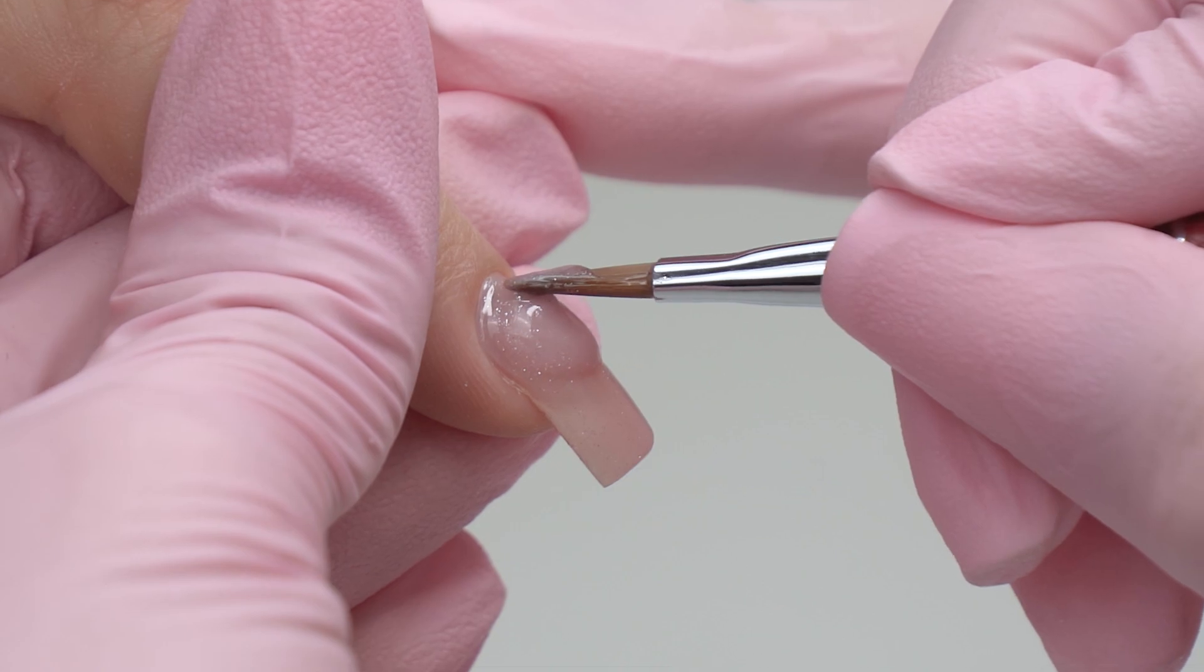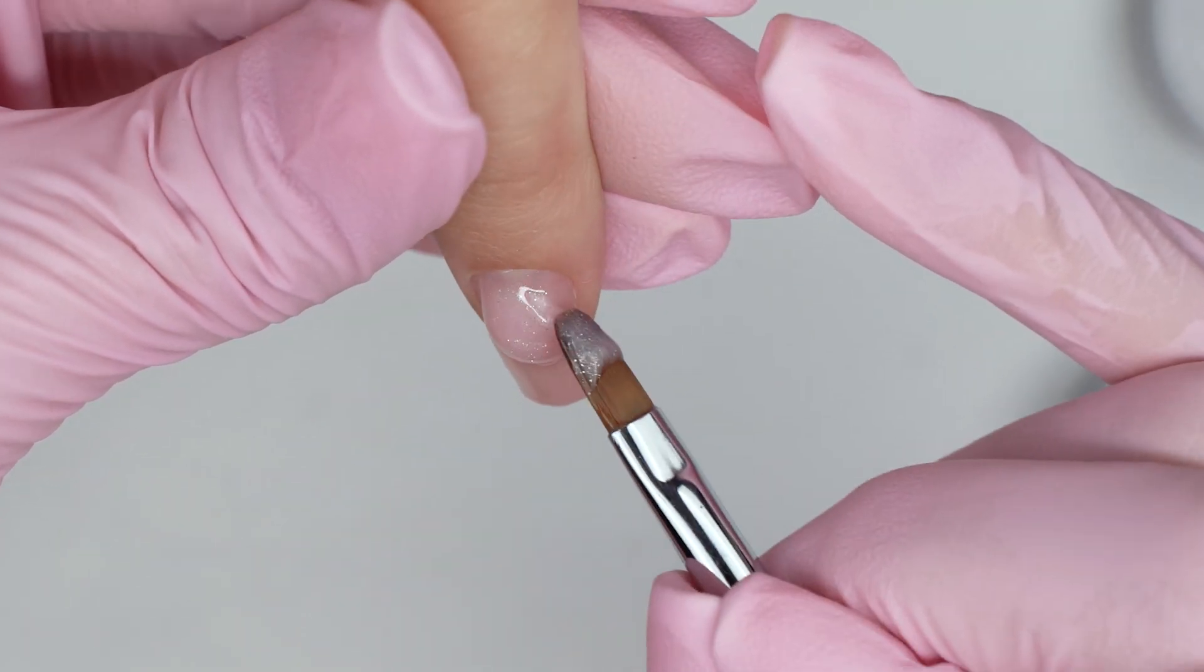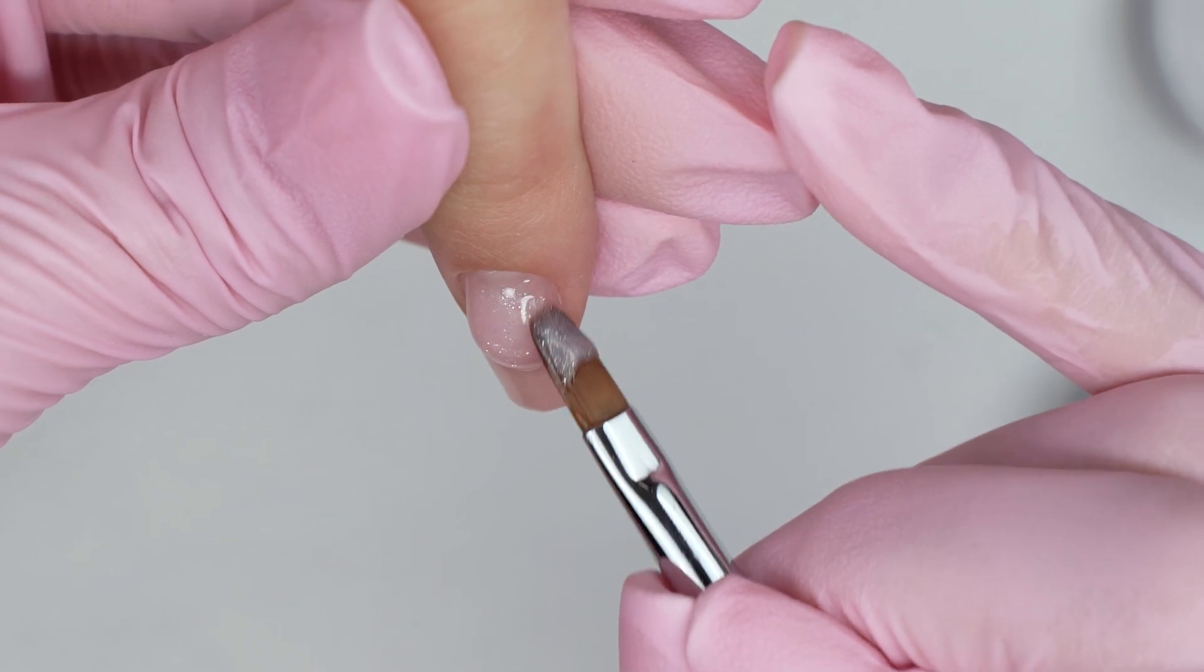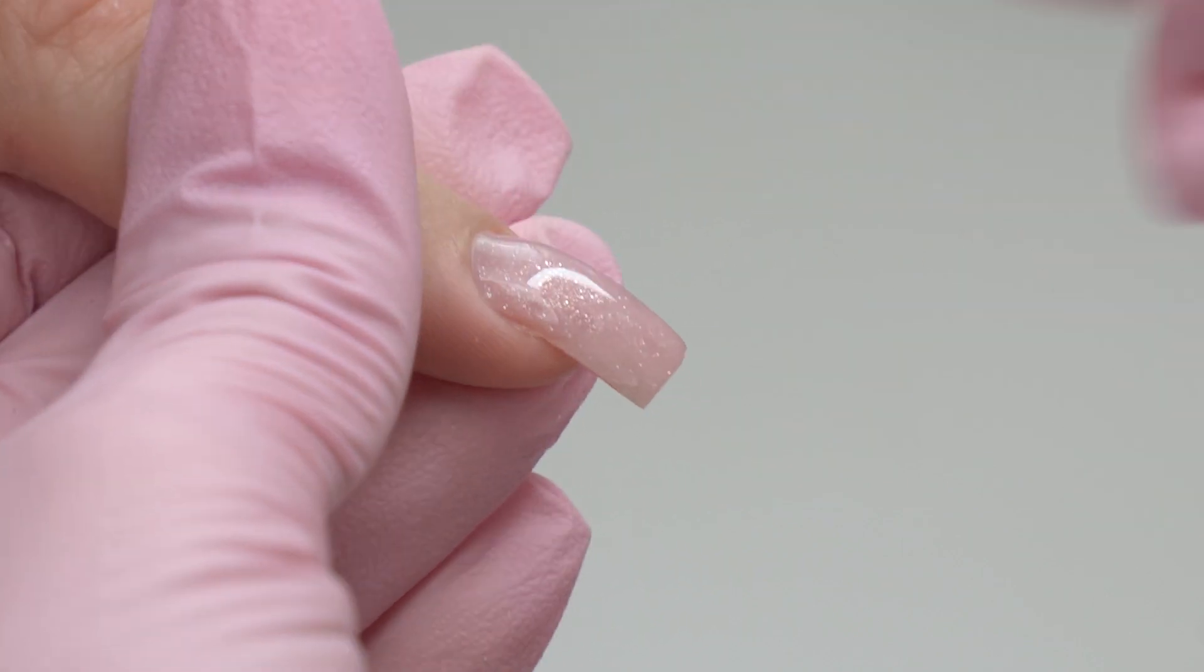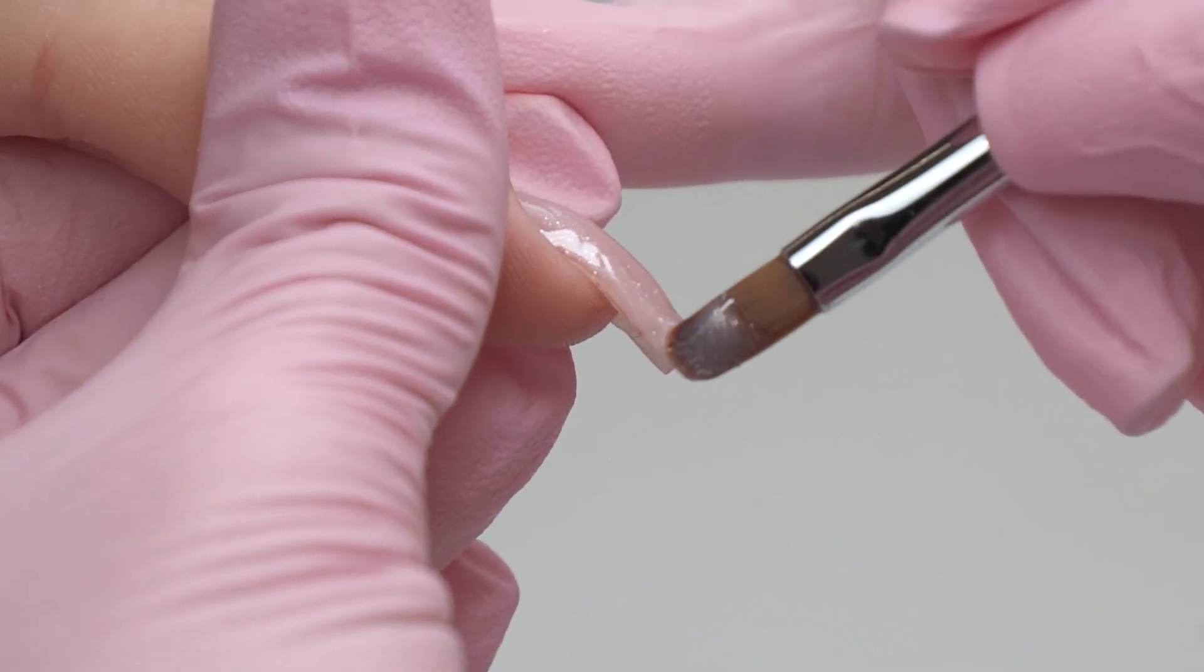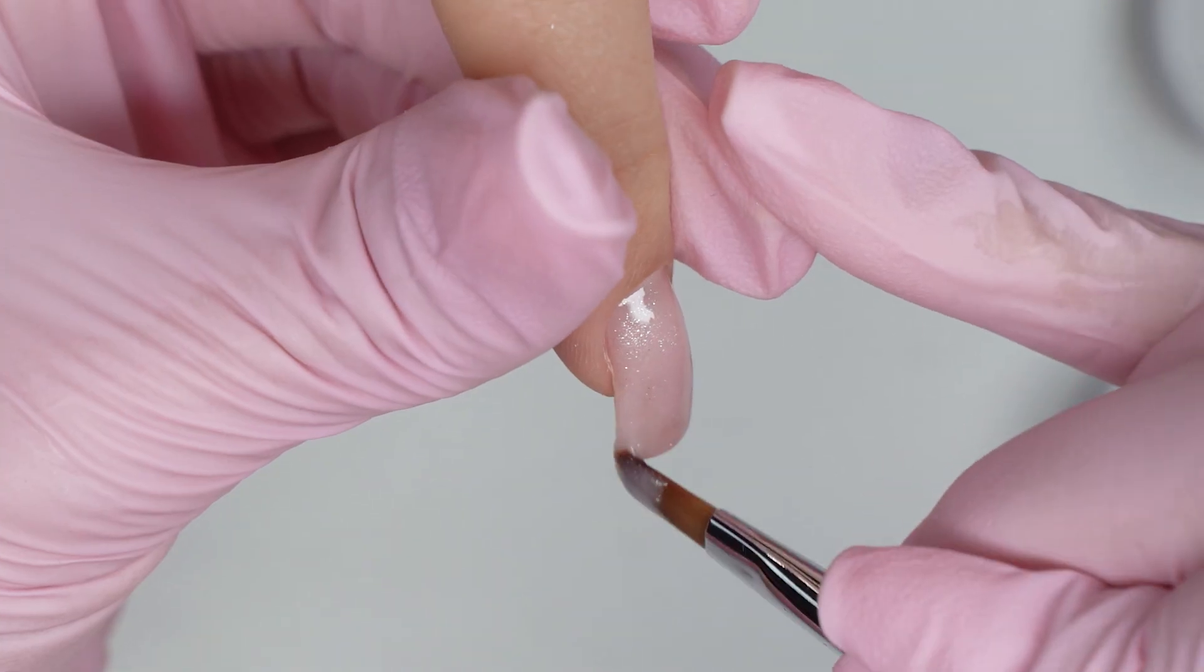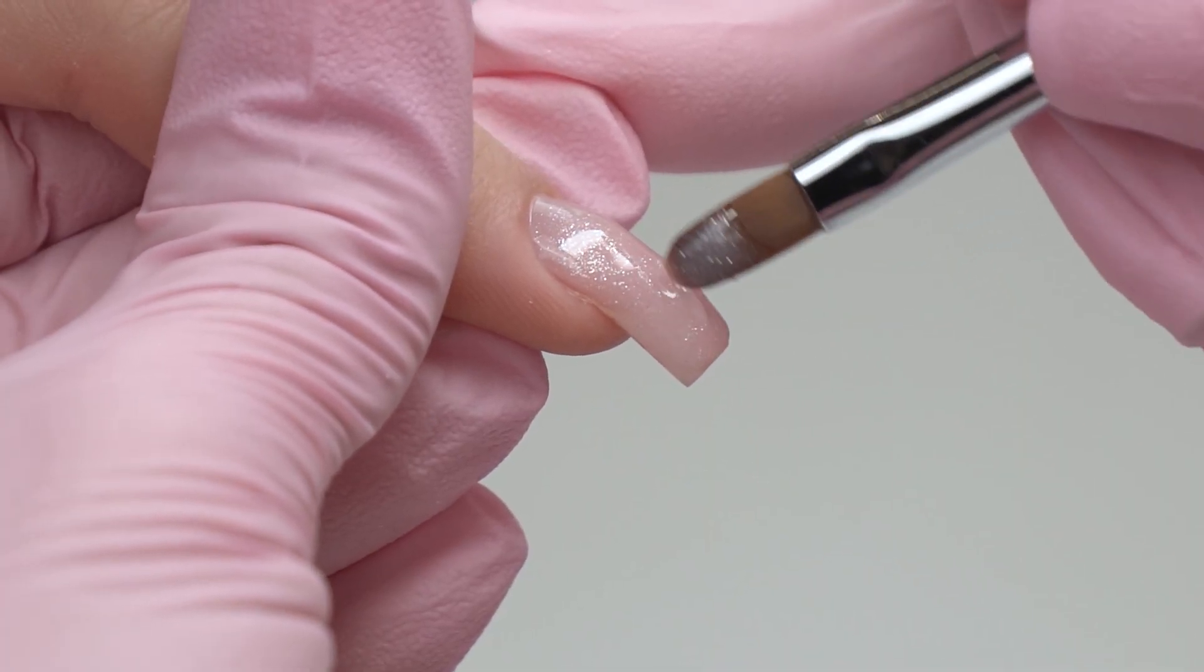And here's how to align it in the cuticle zone. It's a crucial step. Form a 45-degree angle with a brush, leaving about a millimeter gap near the cuticle line. This way we can form a smooth transition to the natural nail. So, there is no need to waste time on touching it up in the cuticle zone.